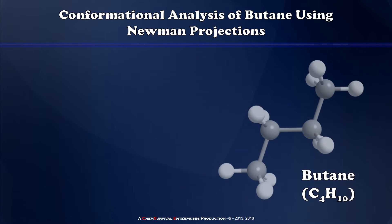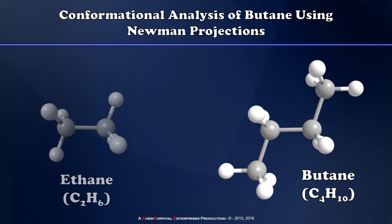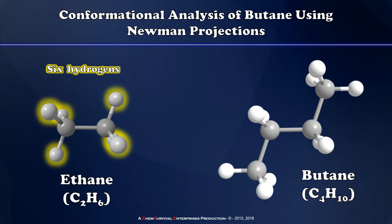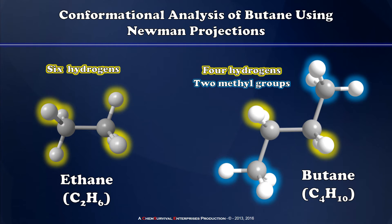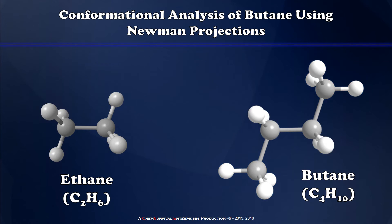Butane is a pretty typical hydrocarbon for you to encounter during the early stages of your organic chemistry course, and it's ever so slightly more complex than ethane in the sense that it doesn't have just six hydrogen substituents around its central carbon atoms, but rather four hydrogens and two methyl groups. That adds a whole new level of complexity to its conformational analysis. But first, let's get a quick refresher about how to do a conformational analysis using Newman projections with the simplest possible example of ethane.